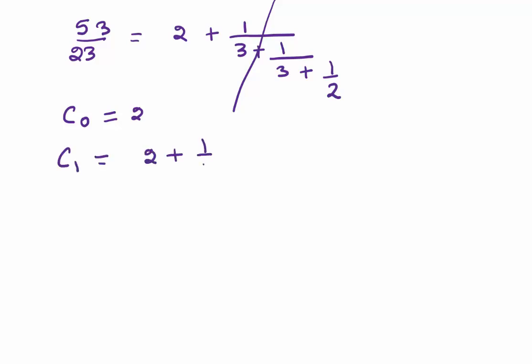Let me show you one thing. How can we find the convergents directly from our continued fraction? We had 53/23 as 2 + 1/(3 + 1/(3 + 1/2)). Let's write all the convergents Ck directly. If I take the fraction only till here, my C0 = 2. If I take the fraction till here, we are truncating, then C1 = 2 + 1/3, which simplifies to 7/3.